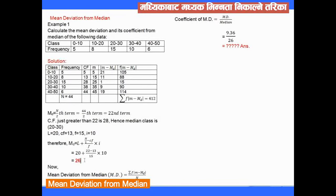After finding the median, we calculate the mean deviation. We find the mid value for each class interval. From each mid value, we subtract the median (26), writing the absolute difference |m - median| for each row.